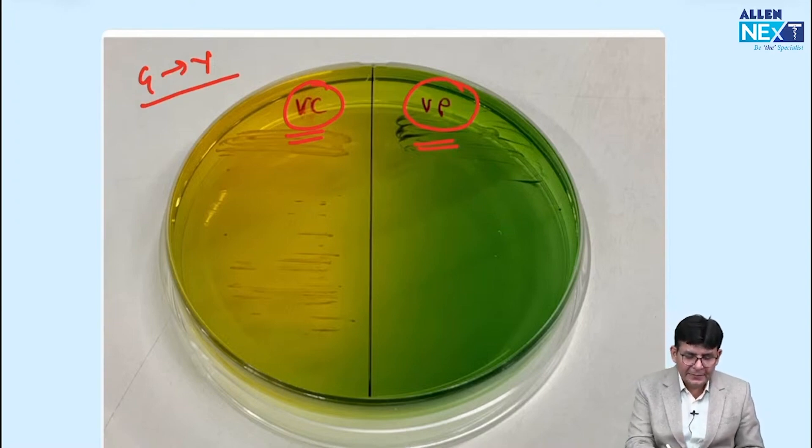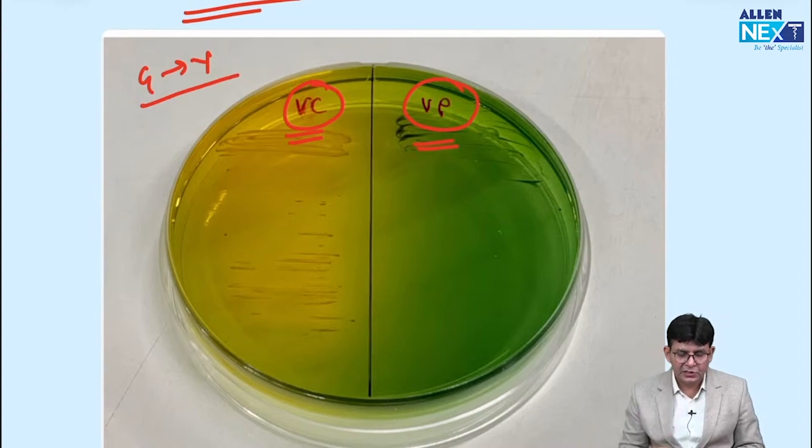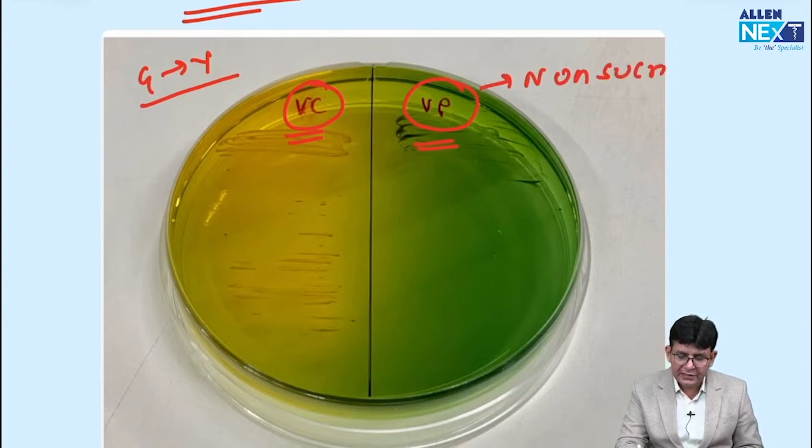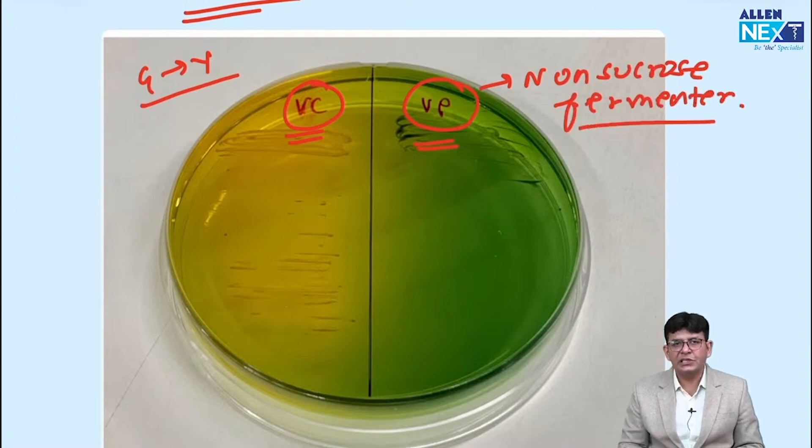you know by that mnemonic COINS. It is COINS positive: catalase, oxidase, indole, nitrate reduction test, sucrose lysis test. So this is COINS positive, Vibrio cholerae is COINS positive. Vibrio parahemolyticus is non-sucrose fermenter. It is a non-sucrose fermenter. So that is why it does not change the color.